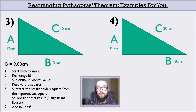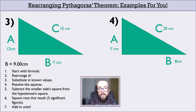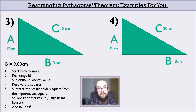If you got B equalling 9.00 centimetres for the third exercise, well done. The workings: A squared plus B squared equals C squared, rearranged to B squared equals C squared minus A squared. Adding in the known values gives B squared equals 15 squared minus 12 squared, which becomes B squared equals 225 minus 144 once you resolve those squares. 225 minus 144 equals 81, and so that's what B squared equals. To get to B, I don't even need a calculator — the square root of 81 is 9. So B equals 9.00 centimetres.